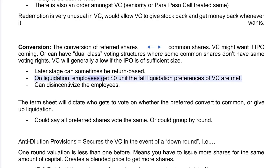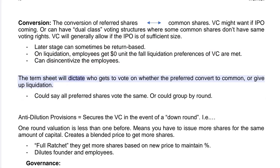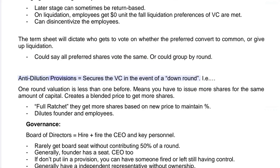On liquidation, employees receive nothing until the full liquidation preferences of the VCs are met, which can disincentivize employees. The term sheet will dictate who gets to vote on whether preferred shares convert to common or give up liquidation preferences — it could say all preferred shares vote the same, or it could group voting by round.